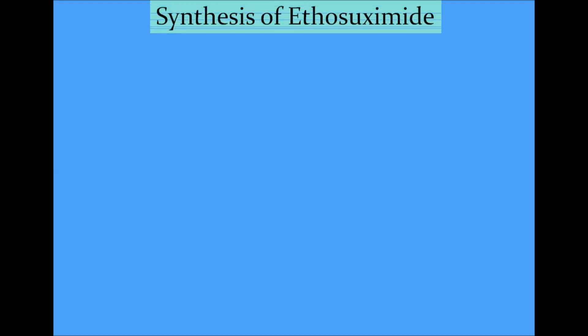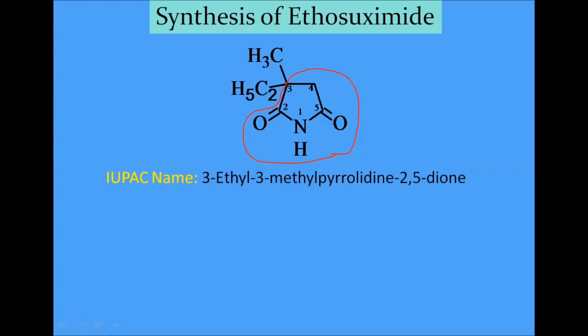Today we will discuss the synthesis of ethosuximide. This is the structure of ethosuximide. This ring is known as the succinimide and this is also a pyrrolidine.